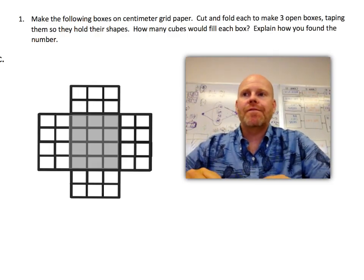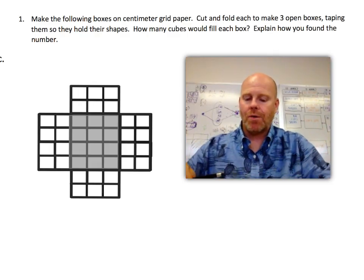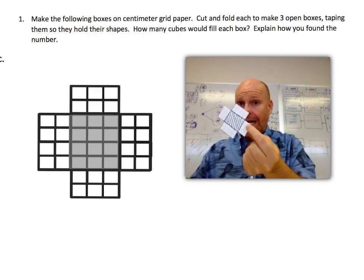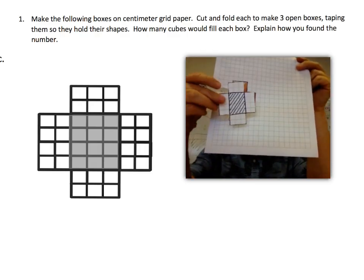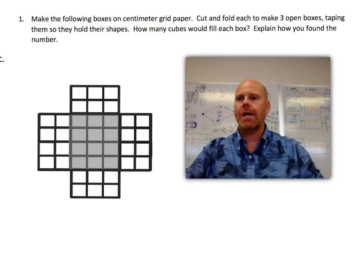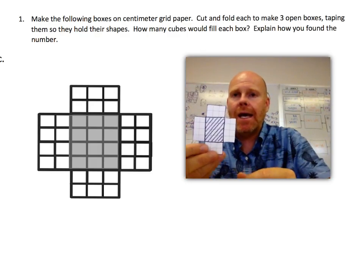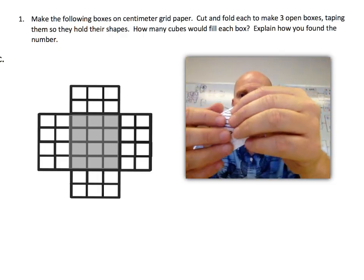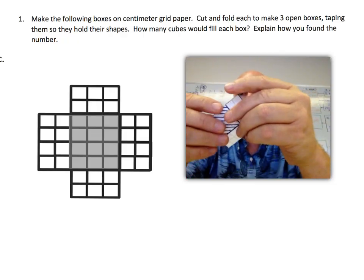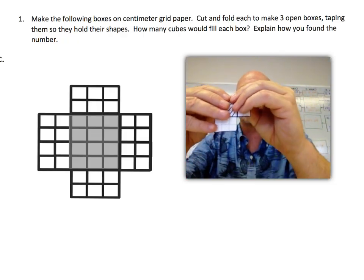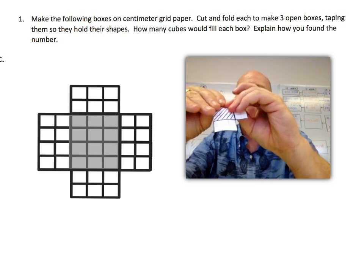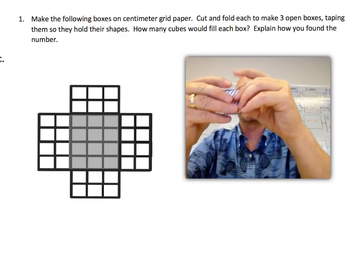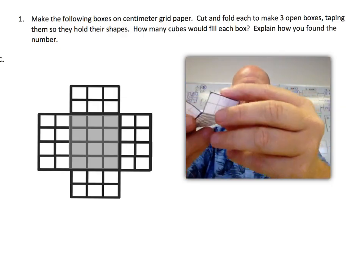All right, this says make the following boxes on centimeter graph paper. So I've got some graph paper here. It says cut out and fold each of these boxes. So I have cut out one of the boxes here, and I think this is problem C. Anyway, and then what we're going to do is we're going to fold it along the lines here, and I am going to create a box with an open lid. Okay, and I'm folding. All right, so here we go. And there's my little box.